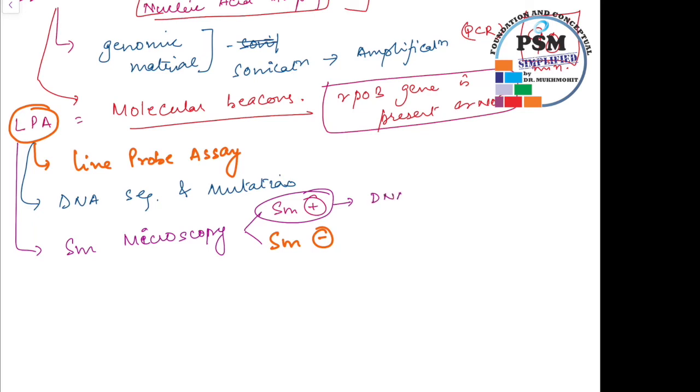If the sample is smear positive, that means the tuberculosis bacilli was detected. So now the DNA is extracted and it is subjected to PCR, polymerase chain reaction. So now you understand that in CBNAT also we were using PCR and in LPA also we are using PCR. All the smear negative samples are inoculated in liquid culture media and LPA is performed using the culture isolate obtained in case there is growth of the mycobacteria.